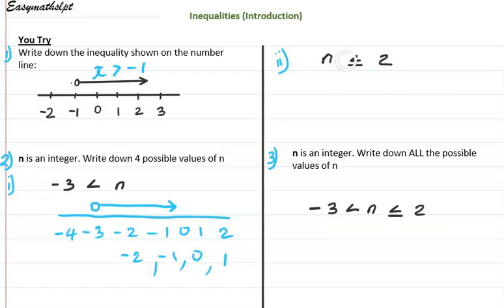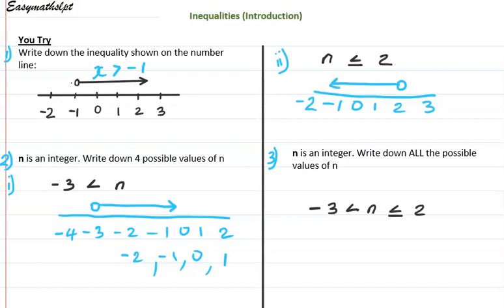n is less than or equal to 2. Let's do a number line with negative 2, negative 1, 0, 1, 2, and 3. My circle is going to be above 2. The arrow goes below the 2 — to the left. But it also says it can be equal to 2, which means 2 is included, so we shade the circle. The four possible values it could take on: 2, 1, 0, negative 1, etc.